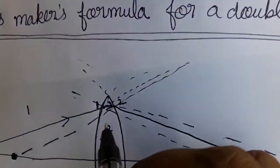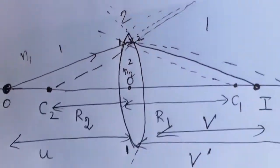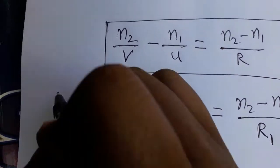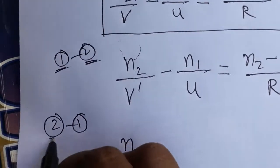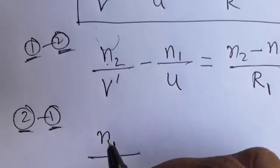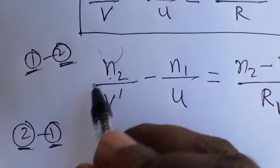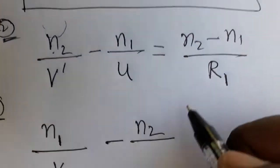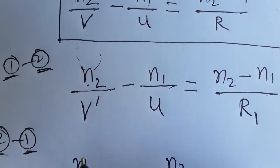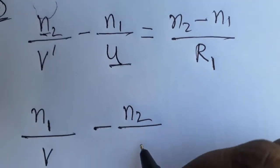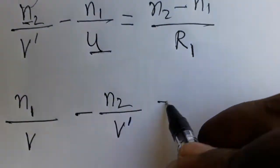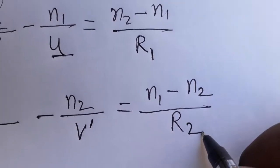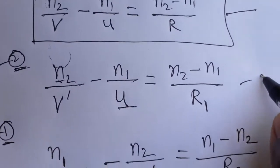For the second surface, light is traveling from the second medium back to the first medium. So the refractive indices are swapped: n1 becomes n2 and n2 becomes n1 in the formula. The object distance for the second surface is v', and the image distance is v. The radius of curvature used here is R2.